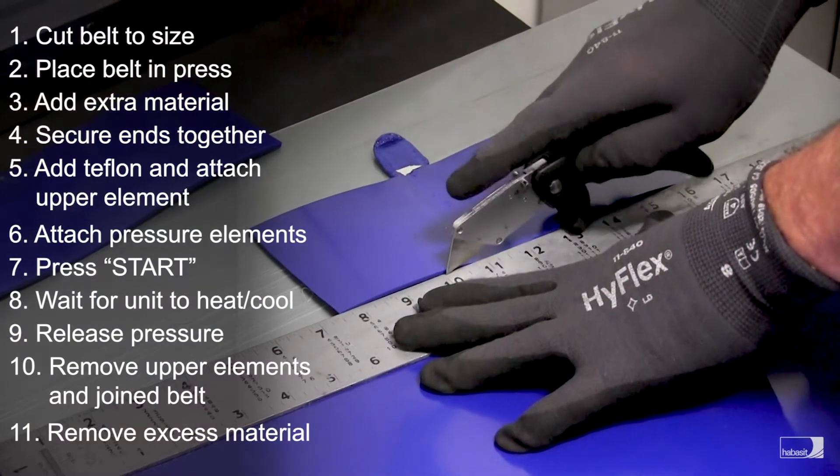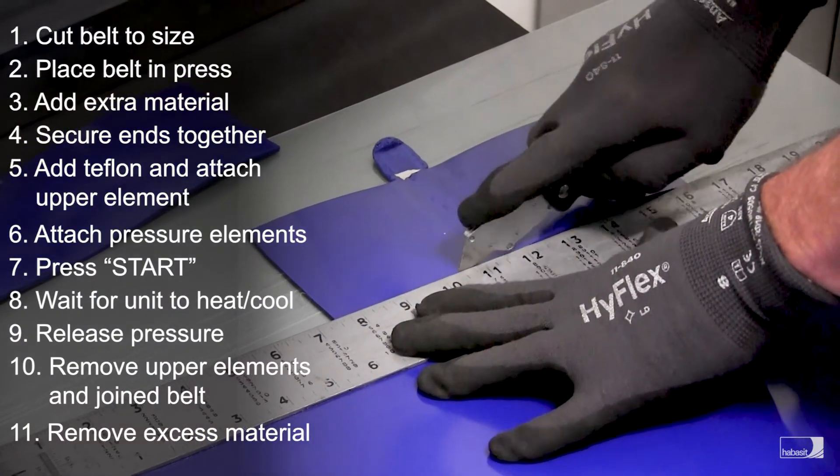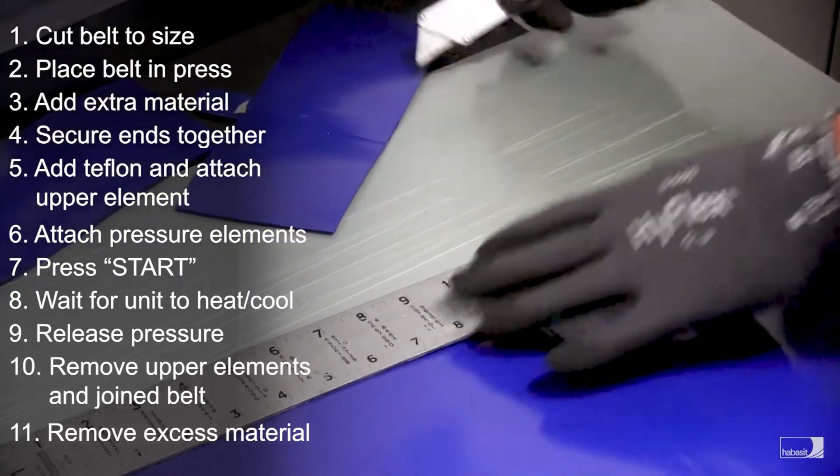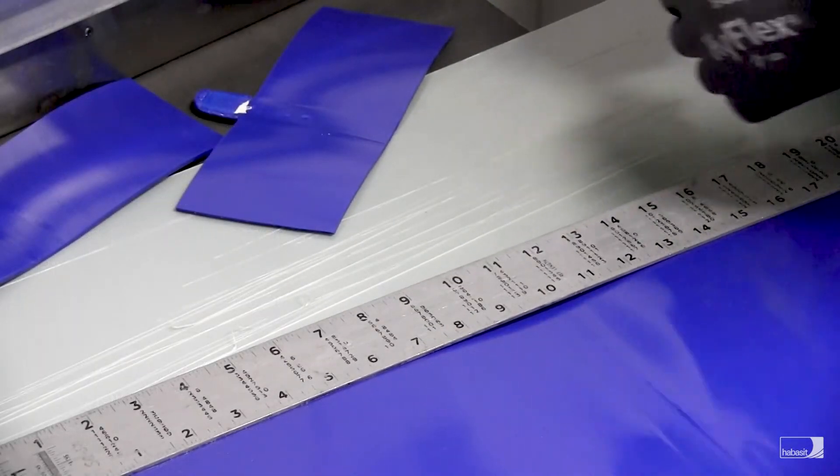With a square, safely trim the side pieces. Ensure to use a cutting pad underneath the belt to ensure you do not cut the press plates. Your belt is now ready for operation.